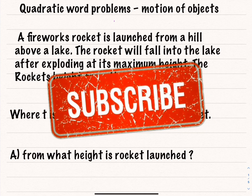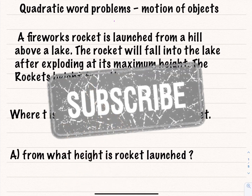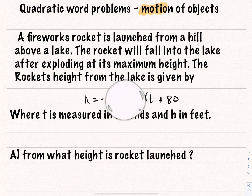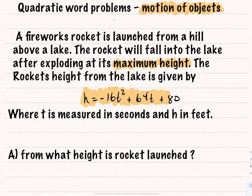In today's lesson, we're going to be looking at quadratic word problems relating to motion of objects. For our first problem, a fireworks rocket is launched from a hill above a lake. The rocket will fall into the lake after exploding at a maximum height. The rocket's height from the lake is given by the following equation, where t is measured in seconds and h is measured in feet.